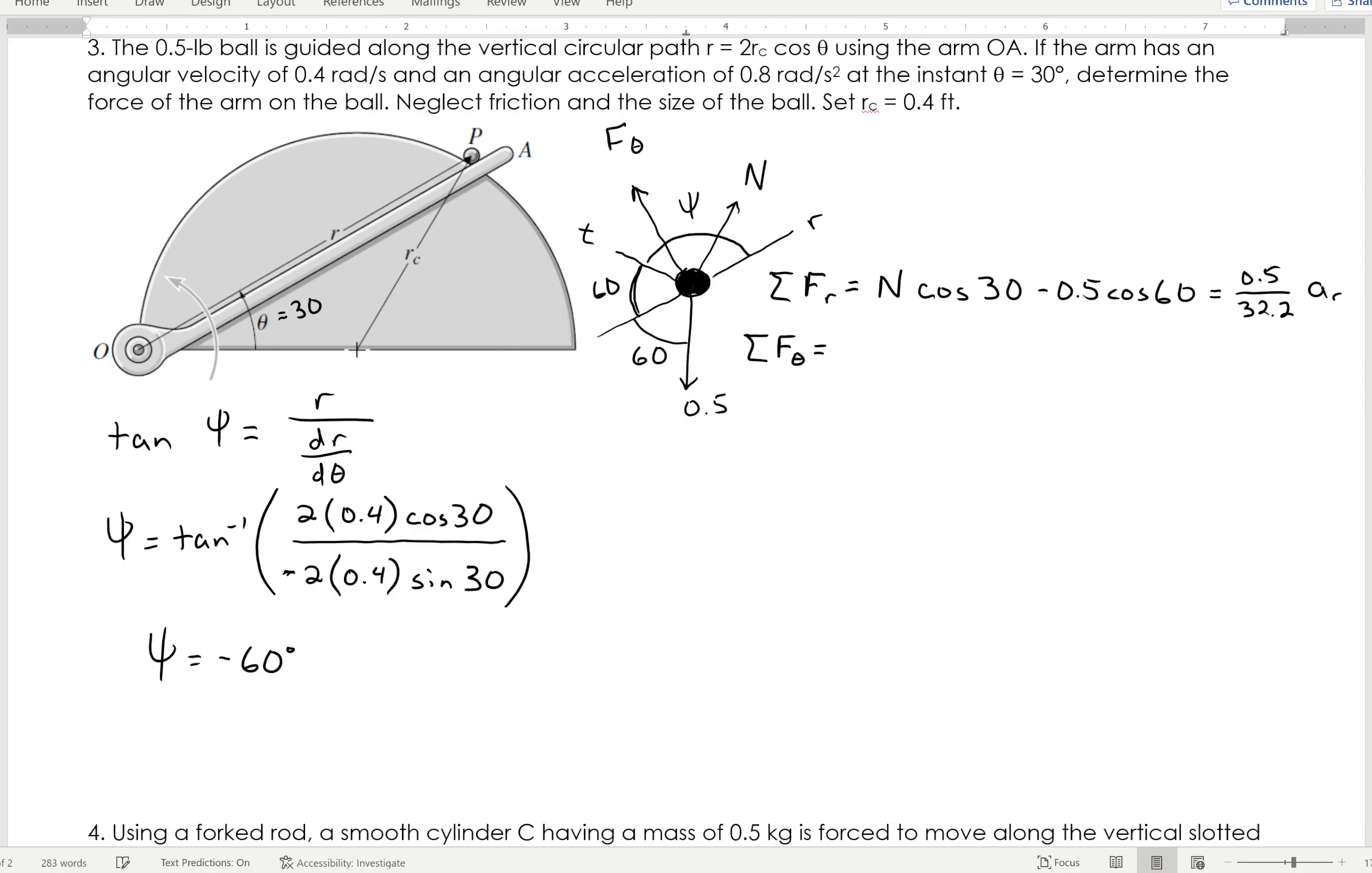So, I'll do the same thing in the theta direction. Where in the theta direction, I've got my force in the theta direction, F theta, that's one thing that I'm trying to find. I have N, this would be sine of 30, flip that from the R direction, and then I do the same thing, flipping the weight of this guy to sine of 60, like so, and then that's going to equal the mass, which is 0.5 divided by 32.2 times the acceleration in the theta direction.